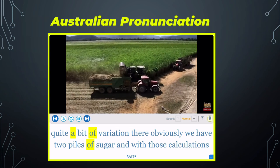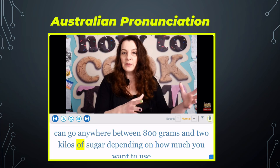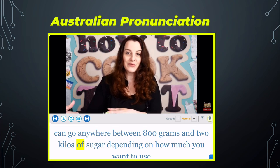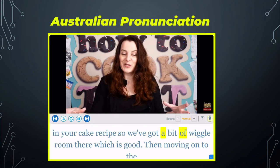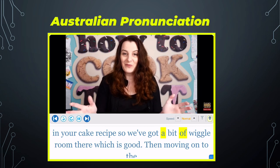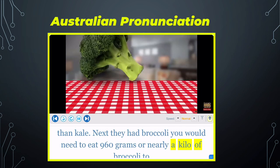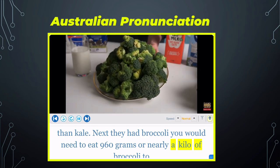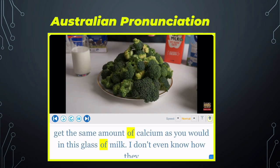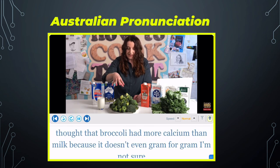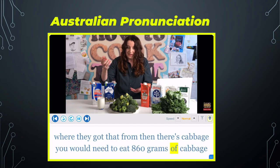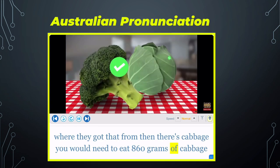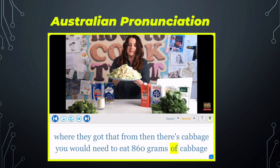There's quite a bit of variation there. Obviously we have two piles of sugar, and with those calculations we can go anywhere between 800 grams and two kilos of sugar, depending on how much you want to use in your cake recipe. Next, they had broccoli — you would need to eat 960 grams, or nearly a kilo of broccoli, to get the same amount of calcium as you would in this glass of milk. I don't know how they thought broccoli had more calcium than milk. Then there's cabbage — you would need to eat 860 grams of cabbage.